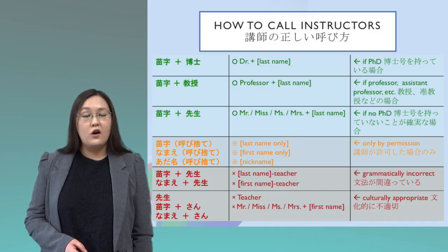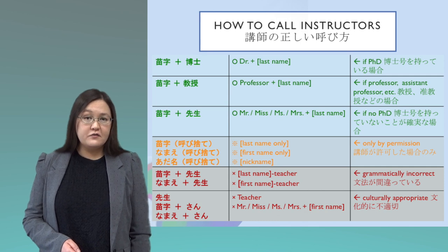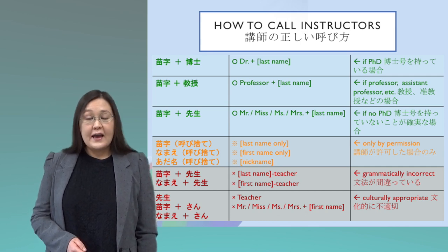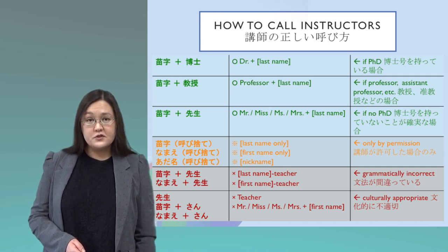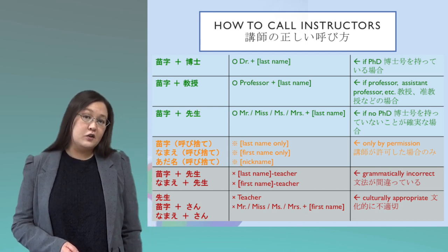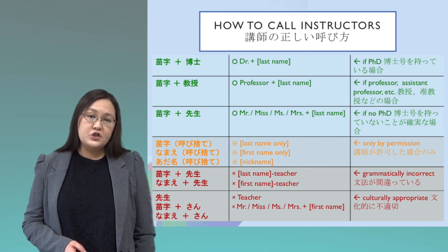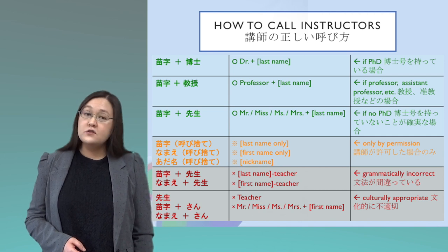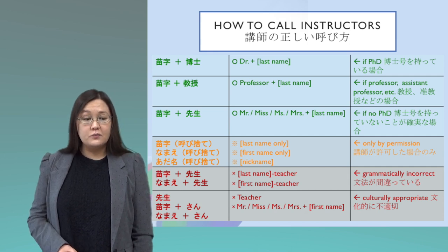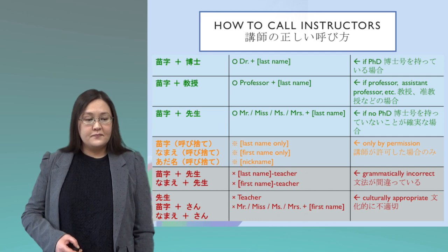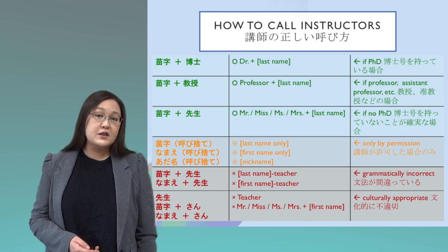One of these is how to call instructors. In Japanese, you use the word sensei for many different kinds of people — for example, elementary school teachers, university professors, medical doctors, and lawyers. Sensei is a very versatile word, but in English we don't have this word. So it depends on each instructor what that person wants to be called, and you need to find out. If you're not sure, please ask the instructor: 'What would you like to be called?' Then please follow the instructor's instructions.